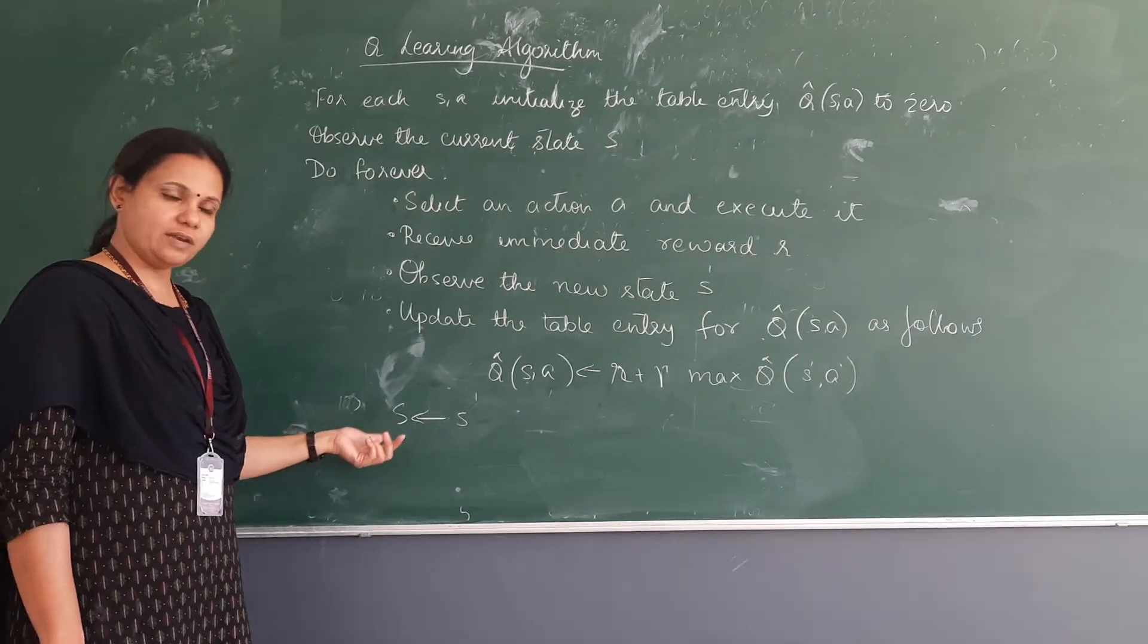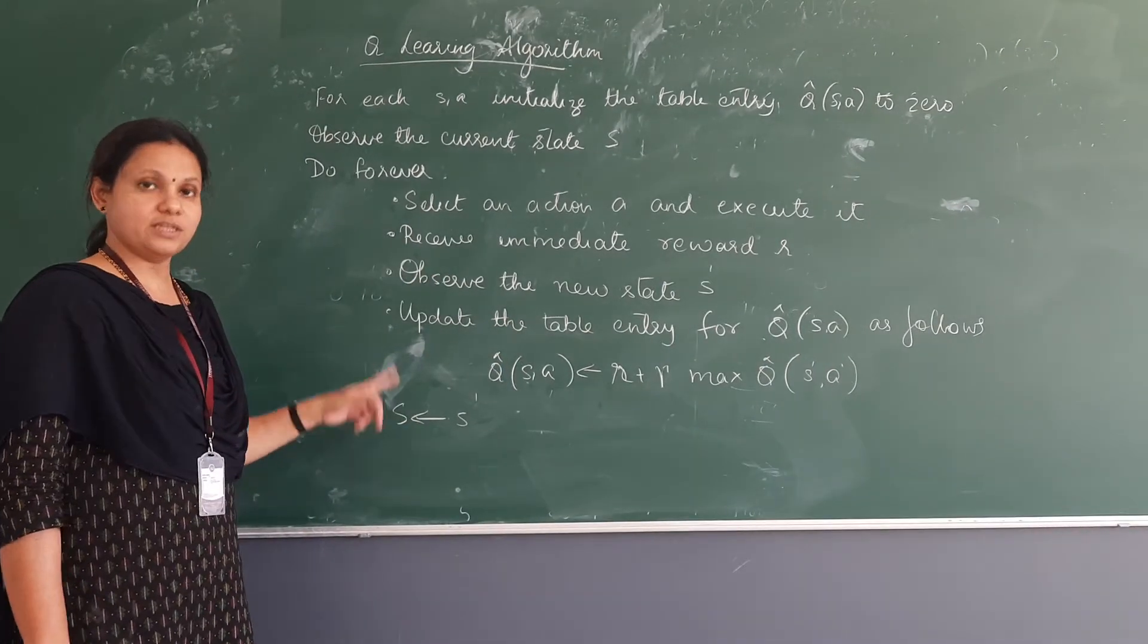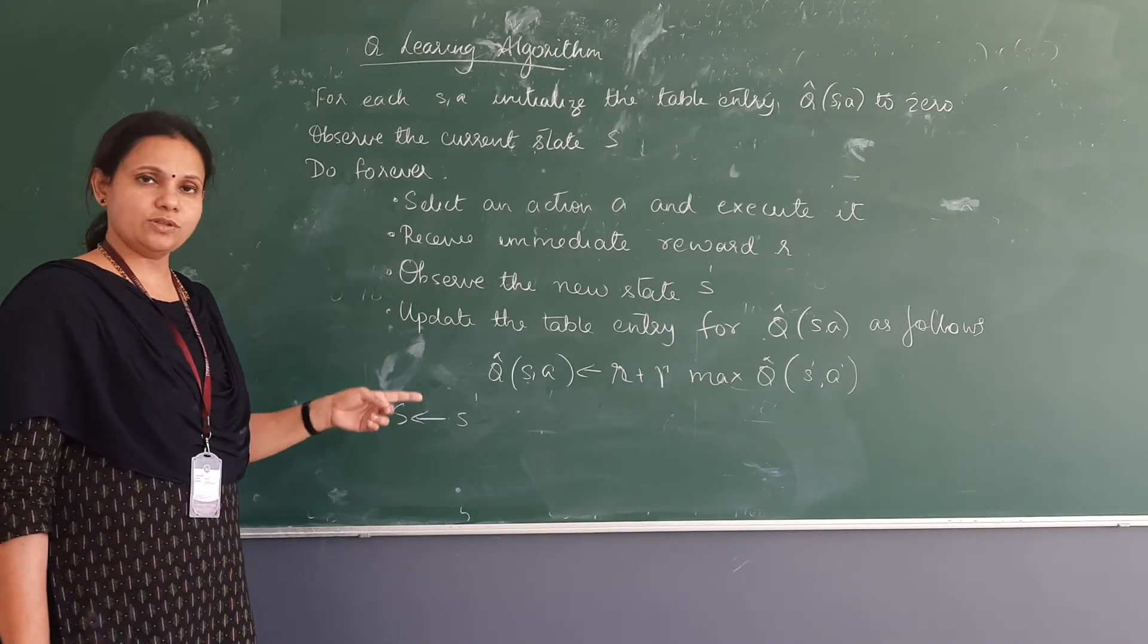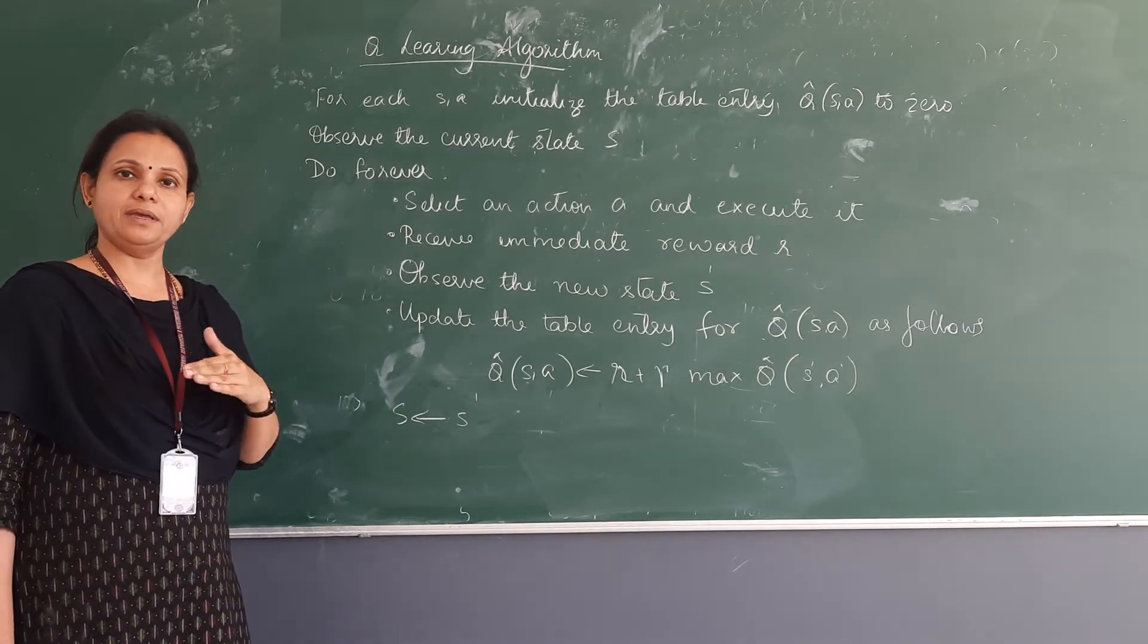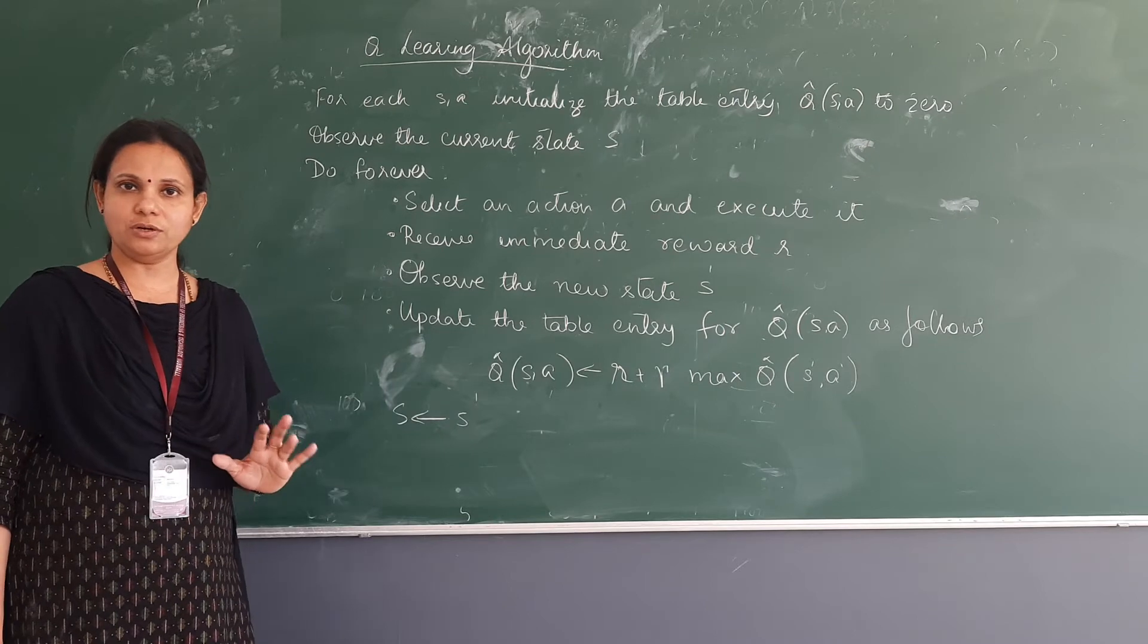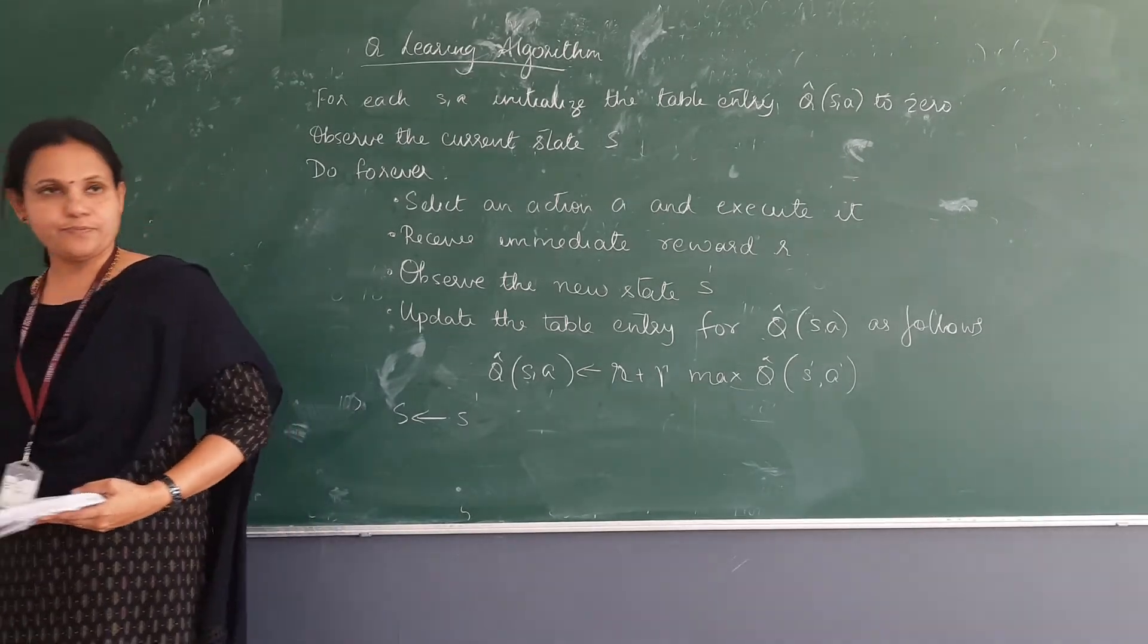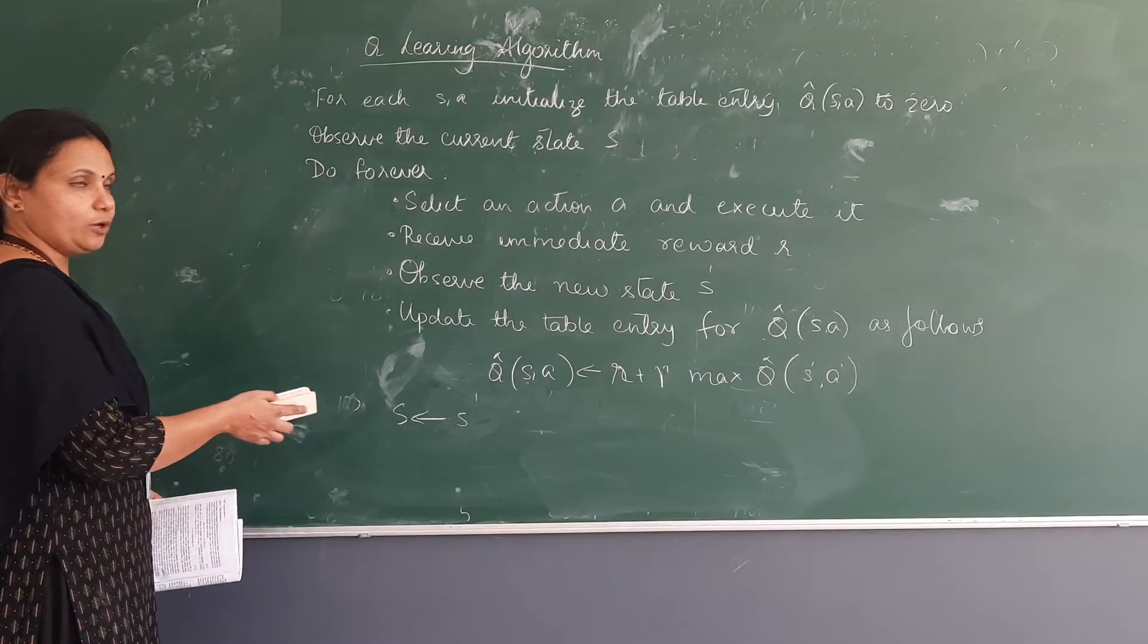And then we got the new state. Again, we repeat the process for the new state and the next state. So this action continues until all the nodes are covered and until we have reached the goal. So based on this, I can write my Q function. This is my Q algorithm.